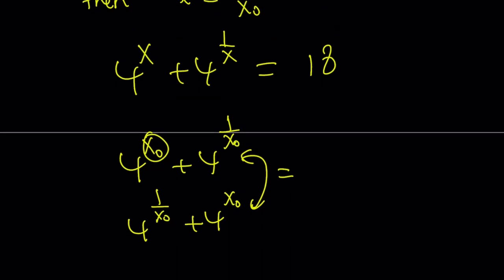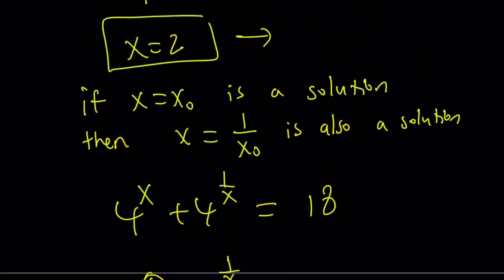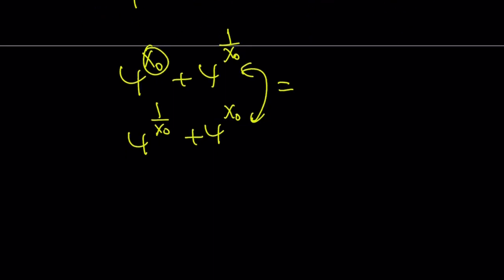Therefore, if x = 2 is a solution, then x = 1/2 must also be a solution. And, are there any other solutions? No. But, let's go ahead and take a look at the graph and get a better idea how these functions behave.